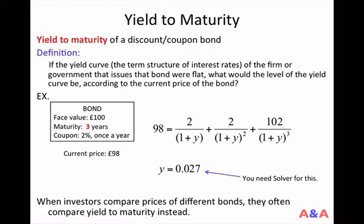Why are investors interested in yield to maturity? When investors compare prices of different bonds, they often compare yield to maturity rather than prices themselves. If you face a variety of bonds and want to know which is relatively cheap or expensive, comparing prices alone is not very informative because prices depend heavily on time to maturity and coupon rate. Converting all prices into yield to maturity makes the comparison more informative.